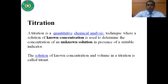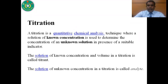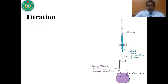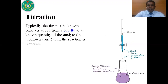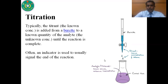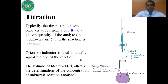So in titration, the solution of known concentration is known as titrant and the unknown concentration solution is known as analyte. Typically, the titrant — the known concentration solution — is added from a burette, and the unknown concentration solution is taken in a conical flask. This titrant is added to the analyte, and an indicator is used to signal the end point of the reaction. By knowing the volume of titrant added from the burette, we can determine the concentration of the unknown solution.